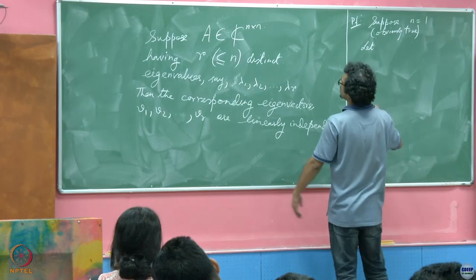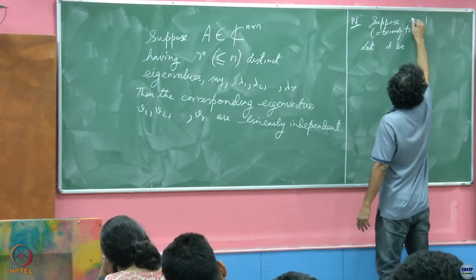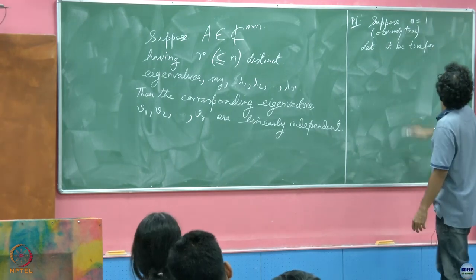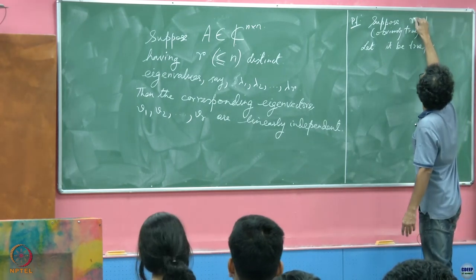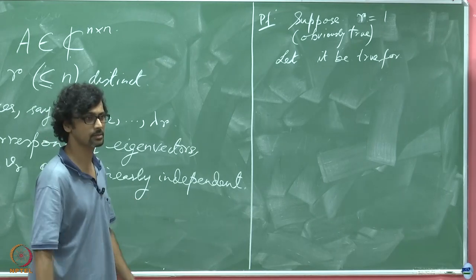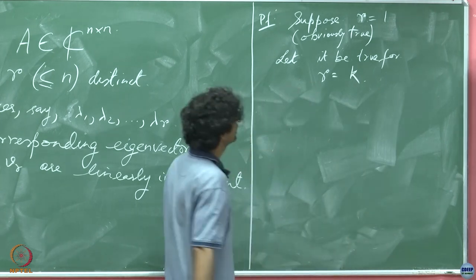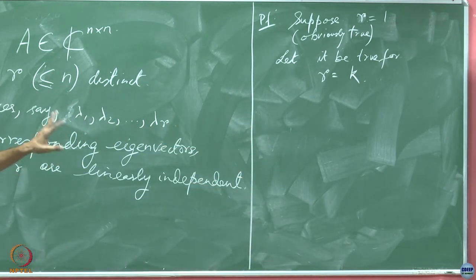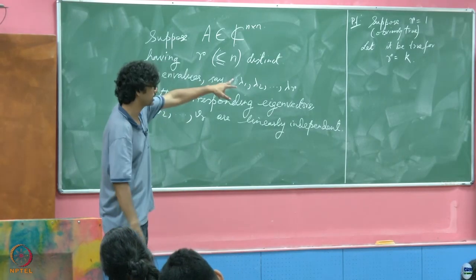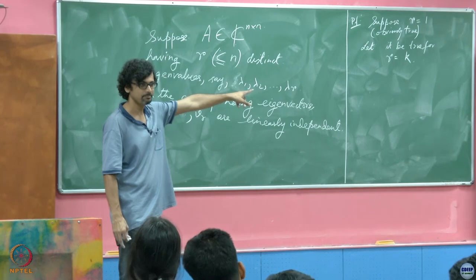Let it be true for r equals k. Because we are going to use induction. Let it be true for r equals k, the base case. So that if you have k distinct eigenvalues, then their eigenvectors are linearly independent.